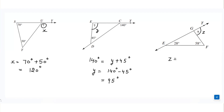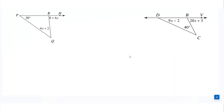Similarly, in part 3, I'll consider this angle as z. So z equals the sum of the opposite interior angles of the triangle, which is 28° plus 58°. Adding them together, we get z equals 86°.